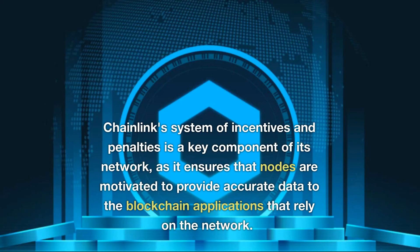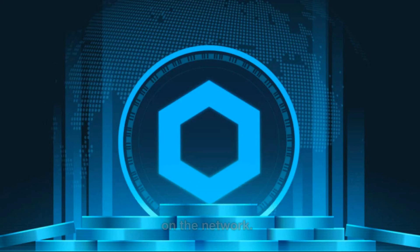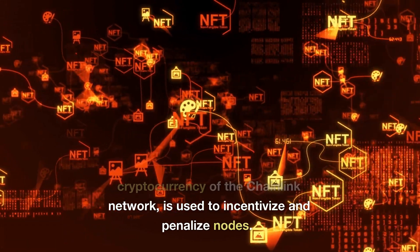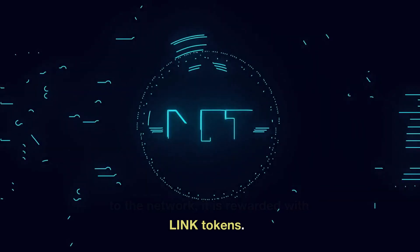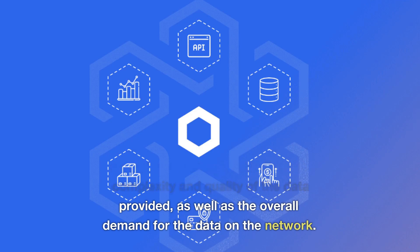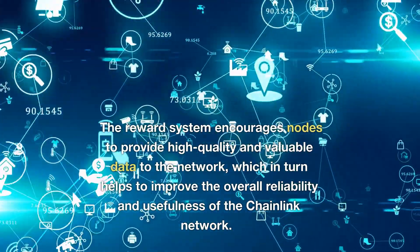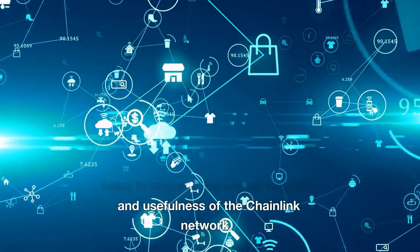Chainlink's system of incentives and penalties is a key component of its network, as it ensures that nodes are motivated to provide accurate data to the blockchain applications that rely on the network. The LINK token, which is the native cryptocurrency of the Chainlink network, is used to incentivize and penalize nodes. When a node provides accurate data to the network, it is rewarded with LINK tokens. The amount of the reward is based on factors including the complexity and quality of the data provided, as well as the overall demand for the data on the network. The reward system encourages nodes to provide high-quality and valuable data, which in turn helps to improve the overall reliability and usefulness of the Chainlink network.